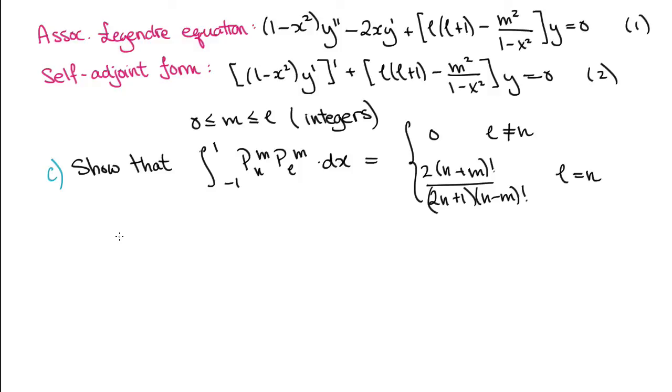In this question, our task is to take the solutions we've derived from the associated Legendre equation, also here written out in self-adjoint form, and compute the inner product between different eigenfunctions PNM and PLM.